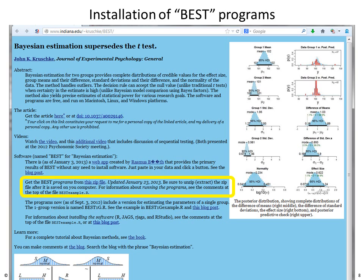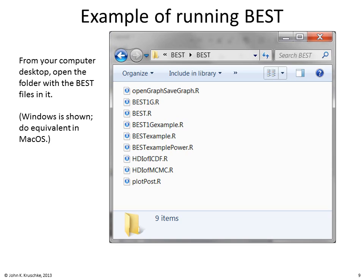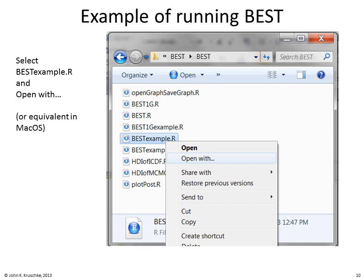Be sure to get the BEST programs themselves from the BEST website, as highlighted in yellow. The programs come in a zip file — when you save that zip file to your computer, be sure to unzip it and extract all the files. Once extracted, the files should be in a folder on your computer, perhaps on your desktop. Open that folder with the BEST files in it. In Windows, select the file bestexample.r and open it with RStudio.